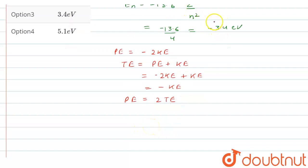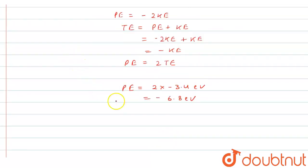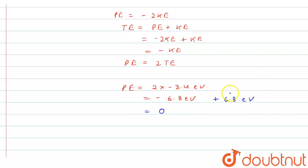The total energy is -3.4 eV, so potential energy equals 2 × (-3.4) = -6.8 electron volts in the first excited state. But the question states that potential energy in the first excited state is zero, meaning we need to add +6.8 electron volts to bring it to zero. That means we add 6.8 eV to every energy level.